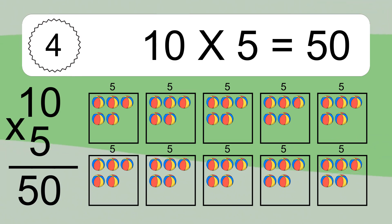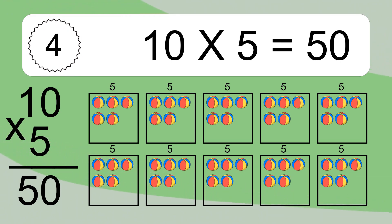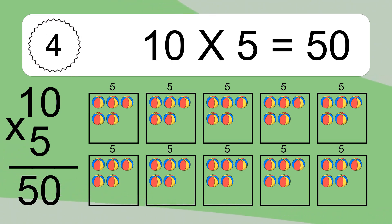We have 10 boxes, and each box has 5 colorful balls inside. If you count all the balls in all the boxes together, you will have 10 times 5 balls. This equals 50 balls.